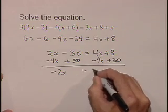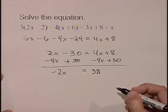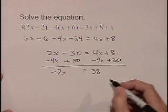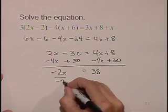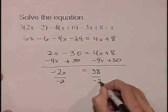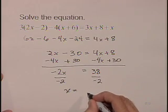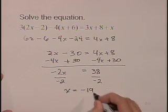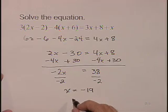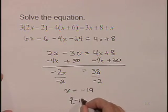So we have negative 2x equals 38. To finish this problem, we are going to divide both sides by negative 2 to get the x by itself. So we get x equals 38 divided by negative 2 is negative 19. So the solution set for this problem is negative 19.